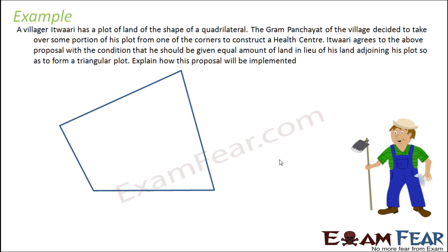A village — Itwari has a plot of land. The Gram Panchayat village decided to take some portion of his plot from one corner to construct an area. The land belongs to Sheew, who has to form a triangular plot.